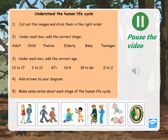Your first task today is to complete a human life cycle. There are pictures included in the home learning pack, but it doesn't matter if you haven't been able to print it out — you can just draw your own version. You're going to order the pictures in the correct order, and next to or underneath each picture write which stage it shows: adult, child, fetus, elderly, baby, or teenager. Then you need to match the age ranges — 13 to 17, 3 to 12, 67 plus, not applicable, 18 to 66, or 0 to 2. Then draw arrows between each stage showing the cycle. As an extension, you might want to add some notes about each stage of the human life cycle. Pause the video while you complete this task.